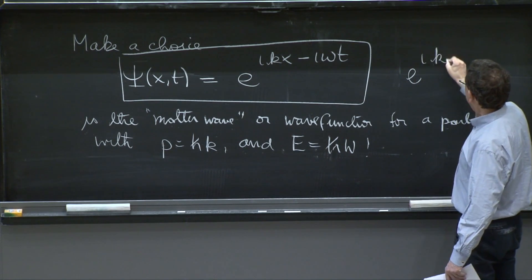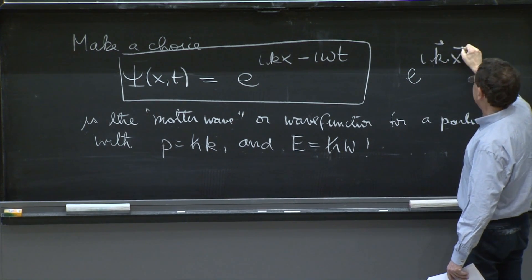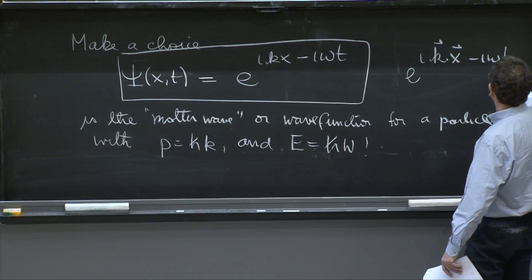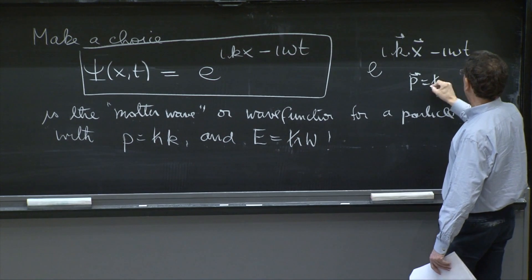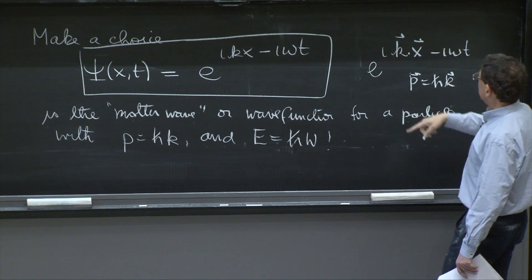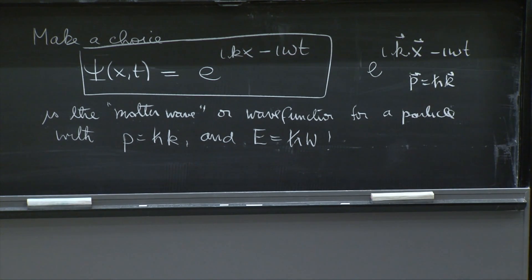You want to do three dimensions? No problem. You put e to the ik vector x vector minus i omega t. And p, in this case, is h bar k vector. So it's a plane wave in three dimensions.